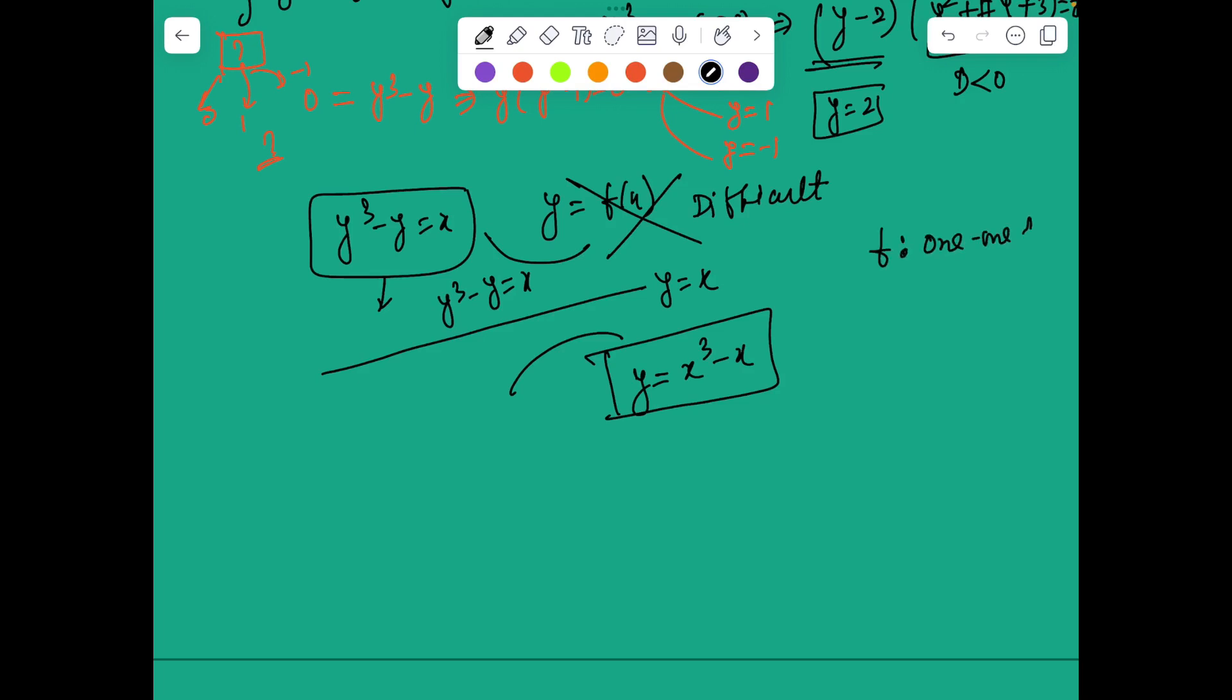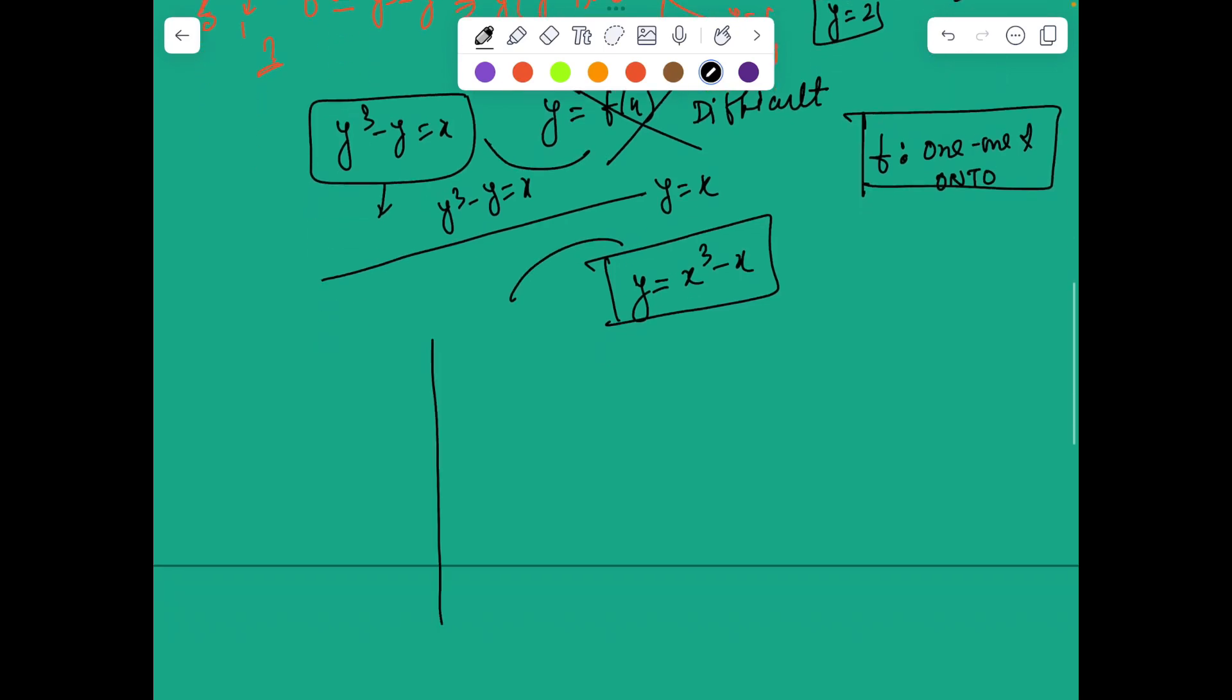So here we go. Now it's easy for us to graph y equals x cubed minus x. We know the points where it crosses: 0, 1, minus 1. So roughly the graph will give a feel like this. This is going to be the cubic graph.